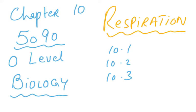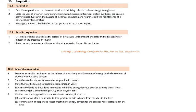Bismillahirrahmanirrahim. This is chapter 10, 5090 O-level biology, and we're going to try and finish this chapter in this video. As we look at the syllabus, 10.1, 10.2, and 10.3: first is describe respiration — chemical reactions that release energy from glucose — then uses of energy, which we talked about in detail.